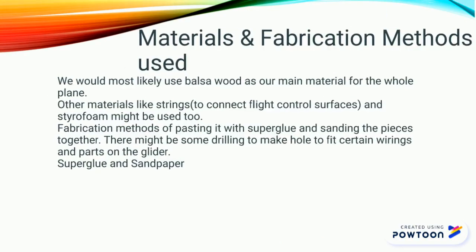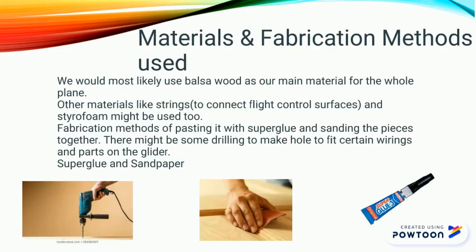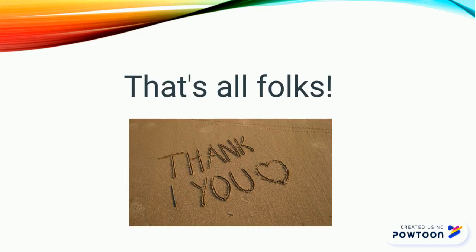Our materials and fabrication methods: we will most likely use balsa wood as our main material for the whole plane. We will definitely use strings to connect our flight control surfaces. Our main method of fabrication is the use of super glue and sanding. This is the end of our video presentation. Thank you so much for your attention.